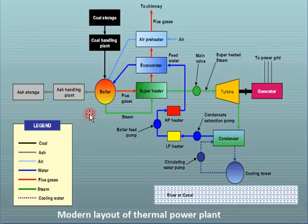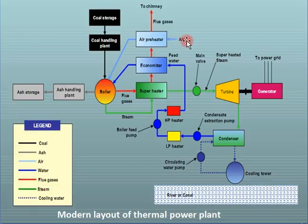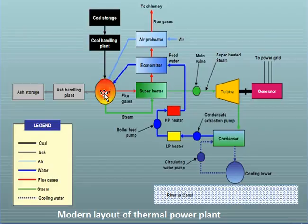For combustion and to produce steam we require fuel. This fuel comes from the coal handling plant. The fuel which comes from outside is brought to storage where it is stored as per requirement. Then it comes to the coal handling plant where it is first pulverized — pulverized means it is converted into powder form — and then it is passed through the boiler. Inside the boiler, air comes from the atmosphere and passes through the air preheater where its temperature is raised with the help of flue gases, and this air and coal mixture come to the boiler and start to combust.